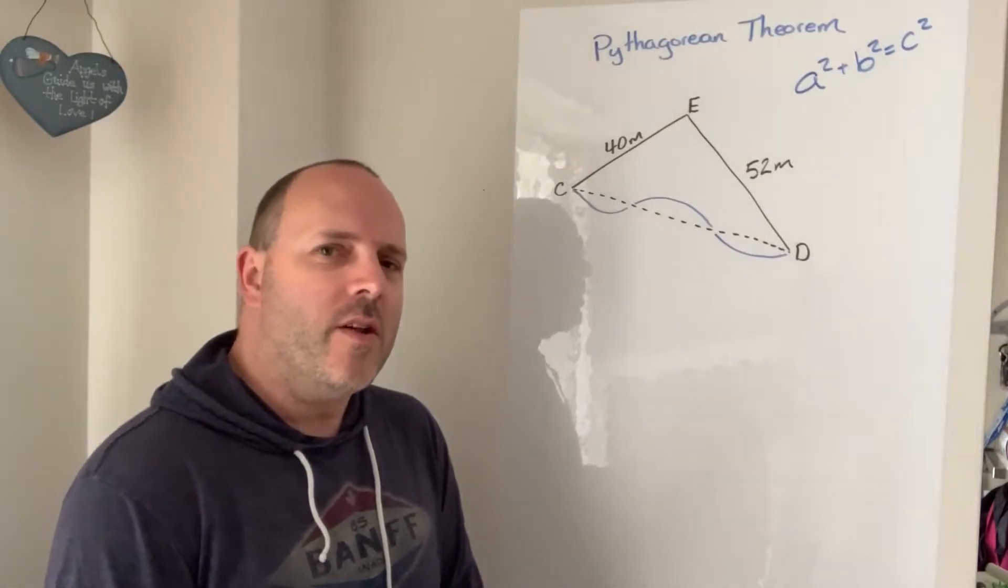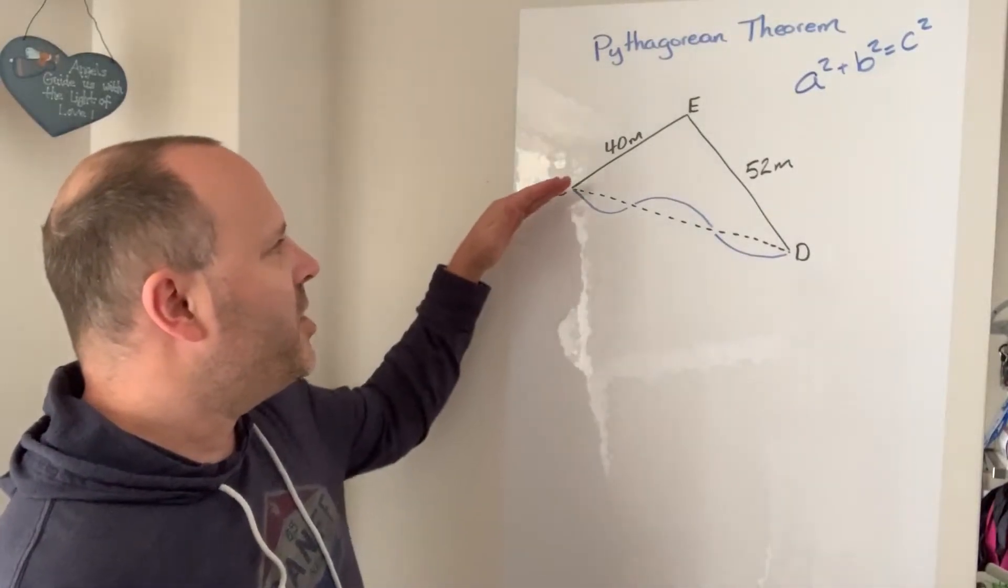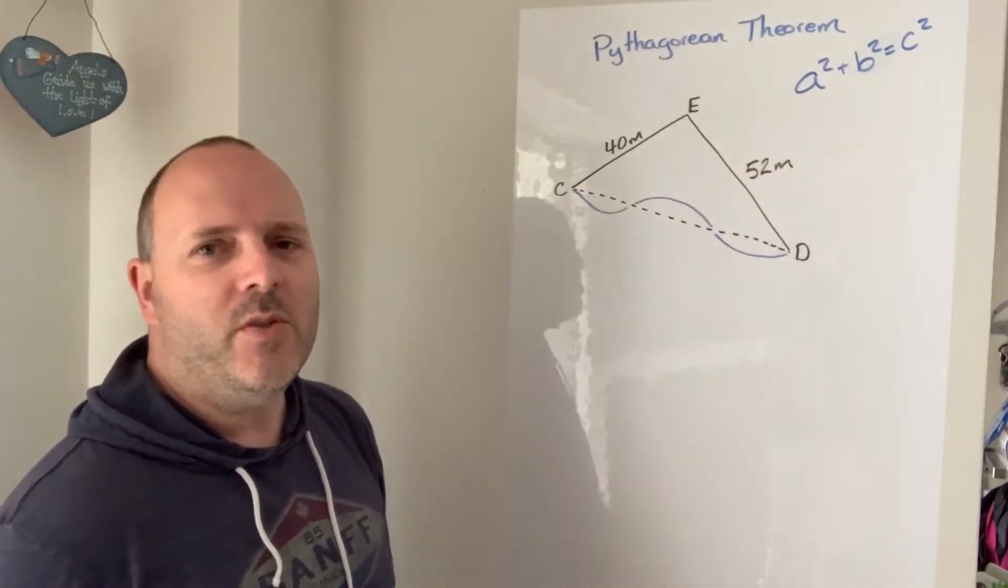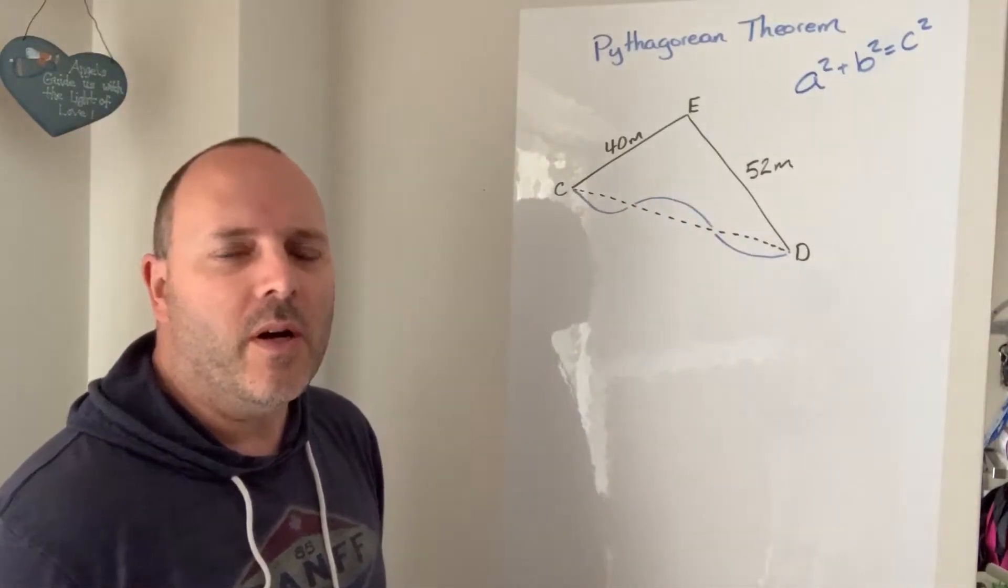And here's my third example for the Pythagorean Theorem. There's a park near my house and on two sides of the park it's sidewalk 40 meters by 52 meters, and then through the middle of the park there's kind of this pathway that just meanders through the park like that.